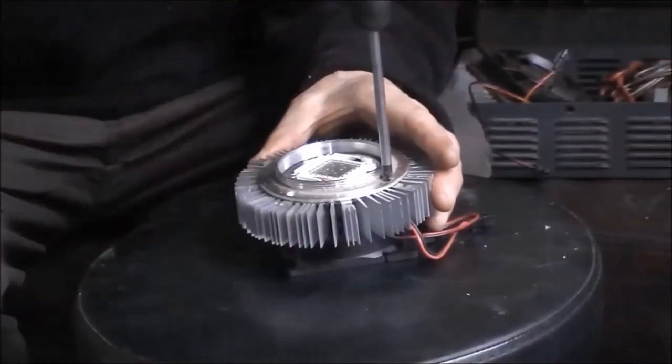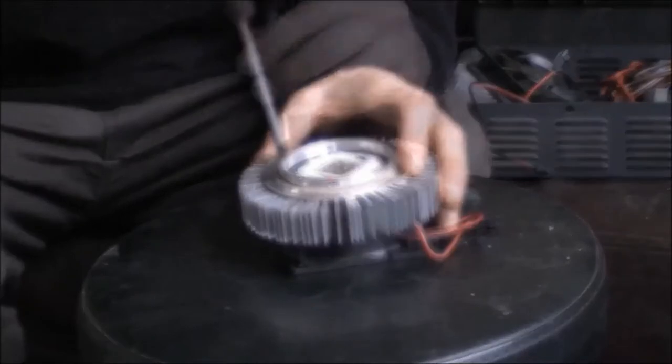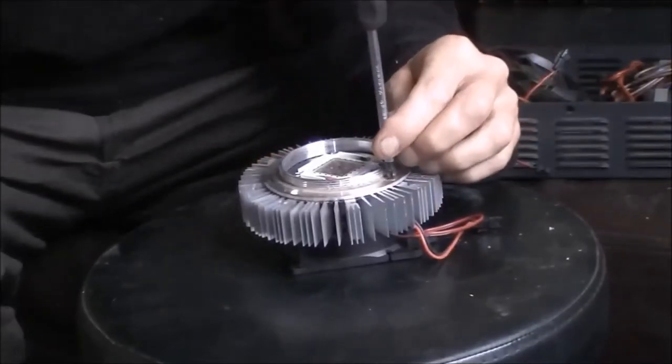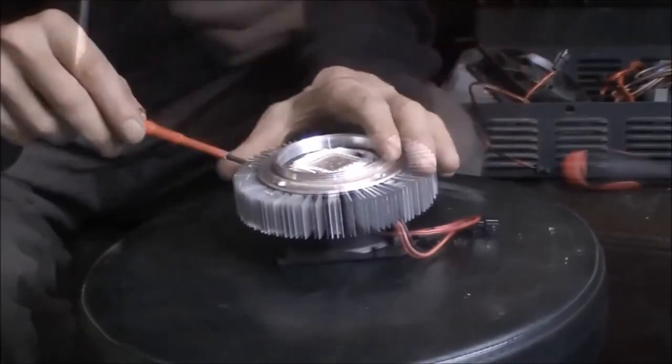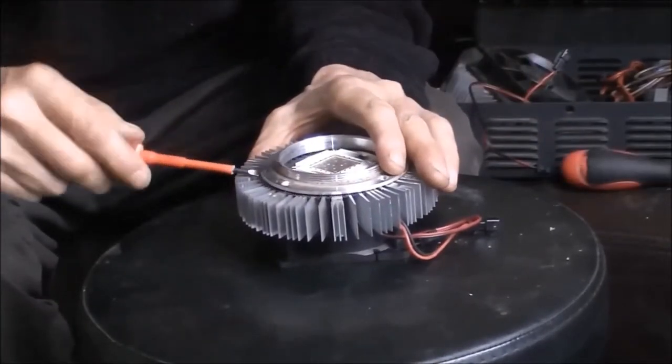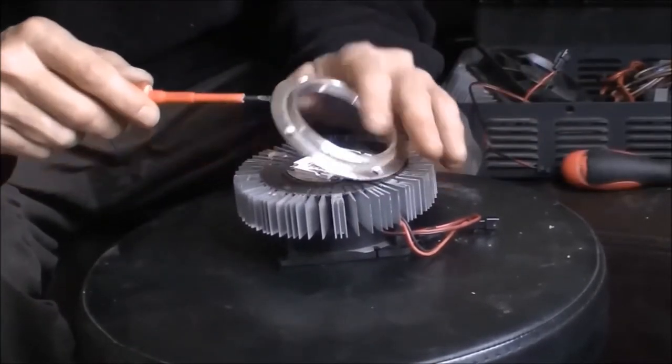So this is just the bulb holder held down by a bit of heat sink paste. I suppose that does serve a dual purpose job in the original fitment where it probably acts to keep some condensation out of the COB.